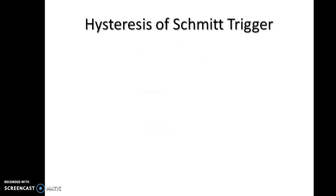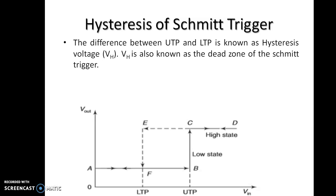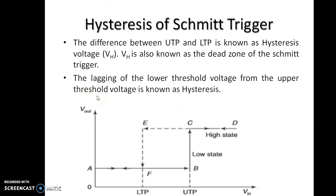Hysteresis of the Schmitt Trigger: The difference between UTP and LTP is known as the hysteresis voltage VH. VH is also known as the dead zone of the Schmitt Trigger. The lagging of the lower threshold voltage from the upper threshold voltage is known as hysteresis, and this loop is called the hysteresis loop.